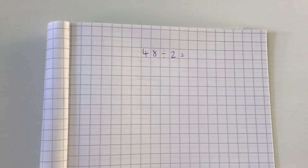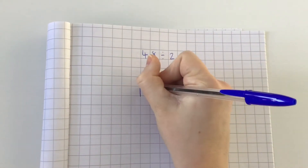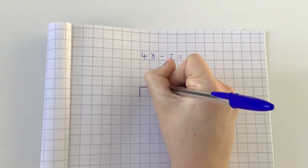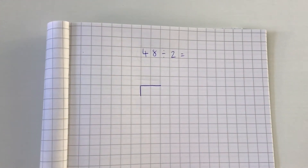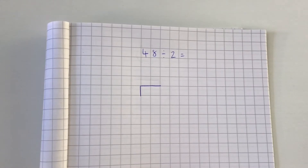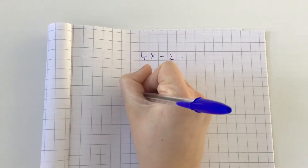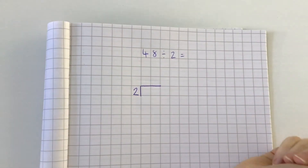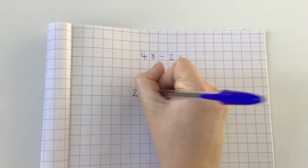Short division starts with two lines: one line coming down and one going across, so it looks a little bit like a sideways L shape. Because the number we are dividing by is 2, that needs to sit on the outside, and 48 needs to go on the inside.